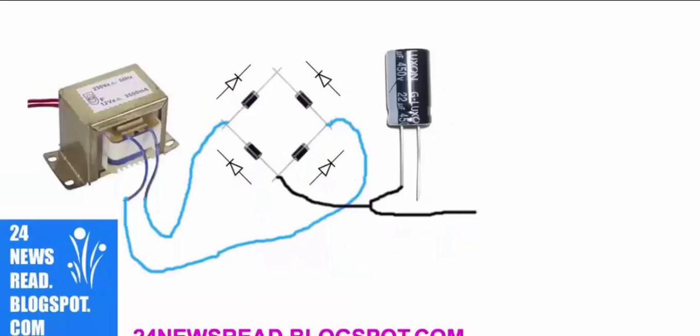Now we set our capacitor minus position and set capacitor plus position. We get 12 volts DC. Now we need a transistor.